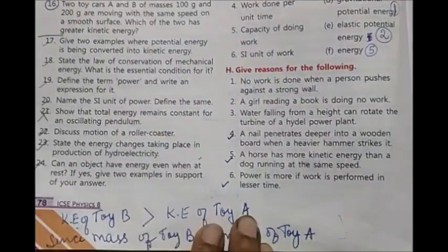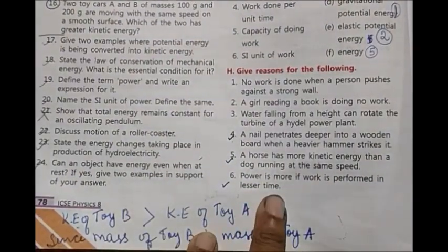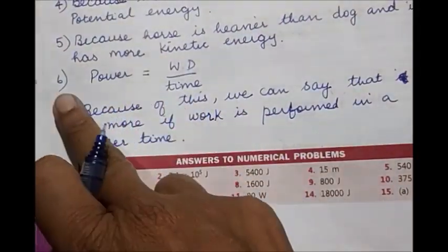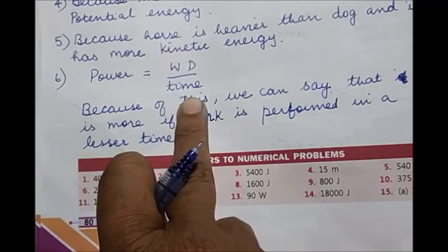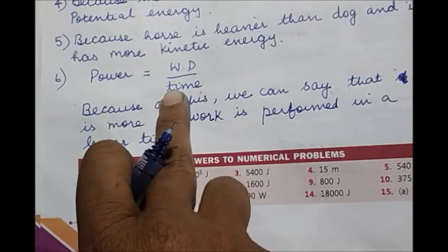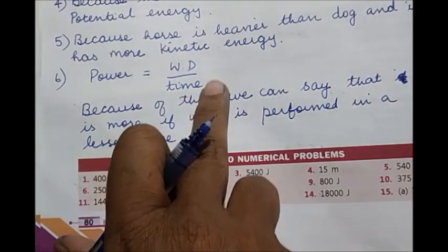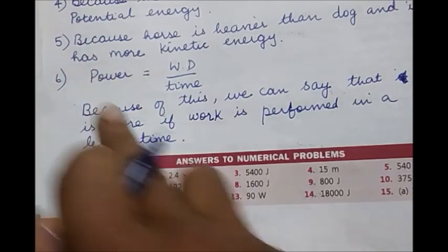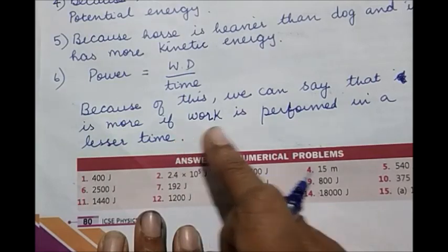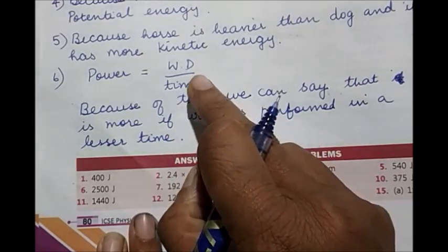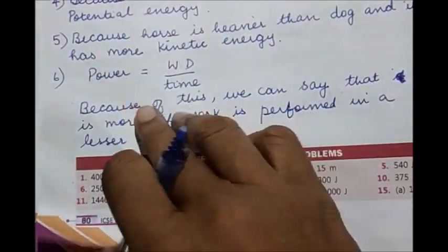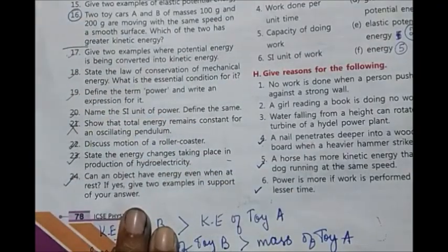Coming to the sixth one: Power is more if work is performed in lesser time. The answer will be like this. You write the formula for power. We know that power is equal to work done upon time. Because time is in the denominator, if you take more time, that means you have less power. Because of this formula, we can say that power is more if work is performed in a lesser time. Based on this formula, we get this conclusion.